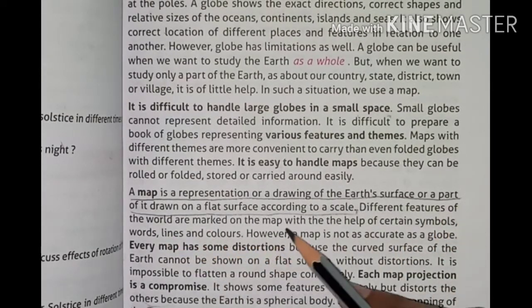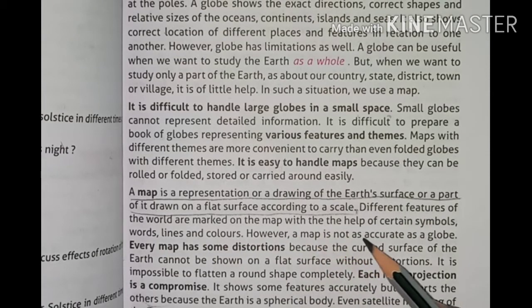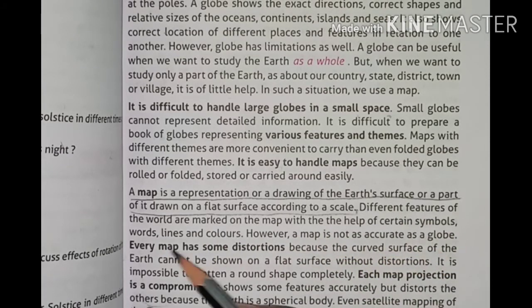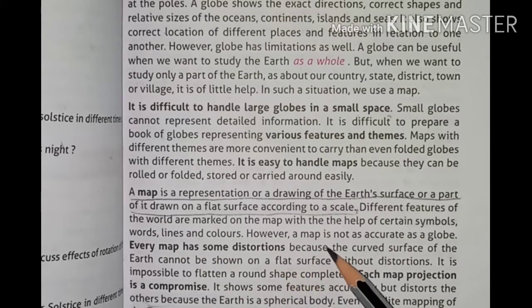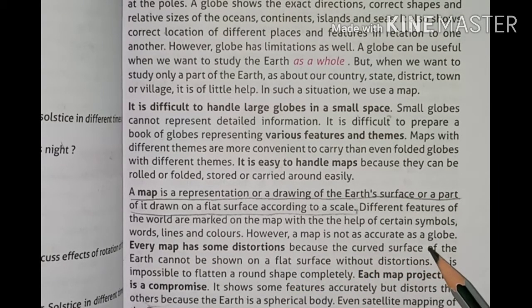Different features and words are marked on the map with the help of certain symbols, words, lines and colors. However, a map is not as accurate as a globe.